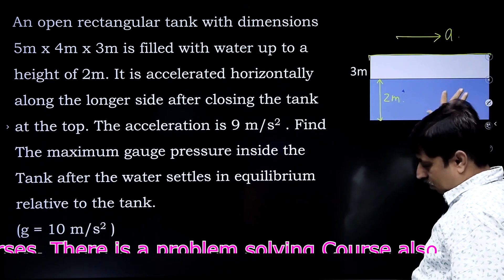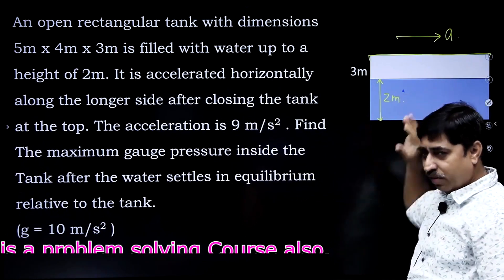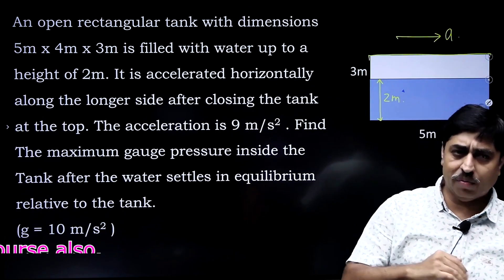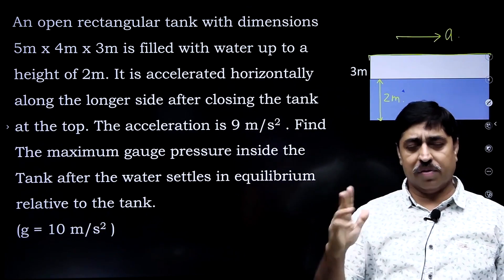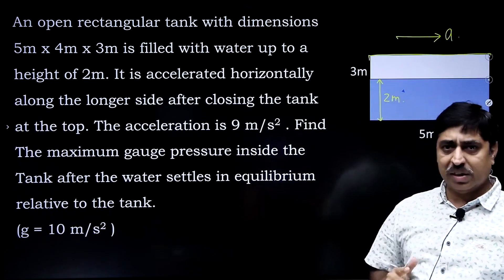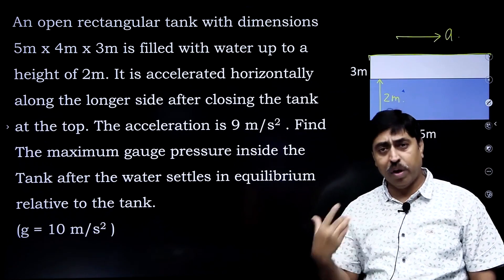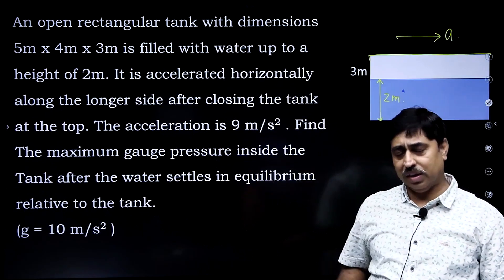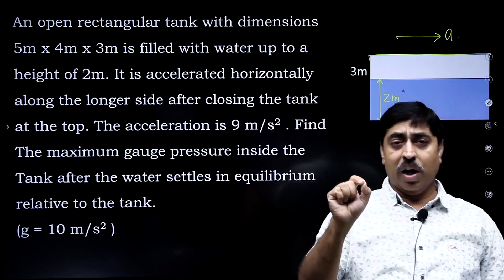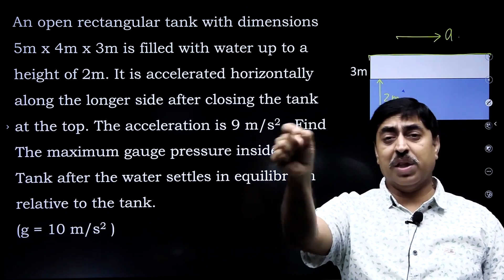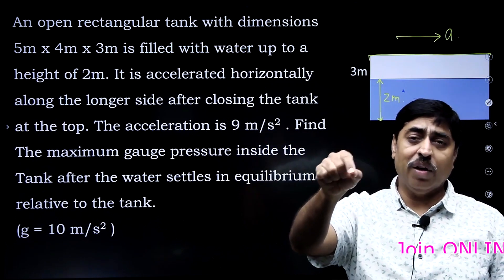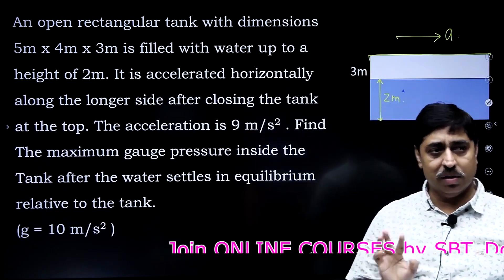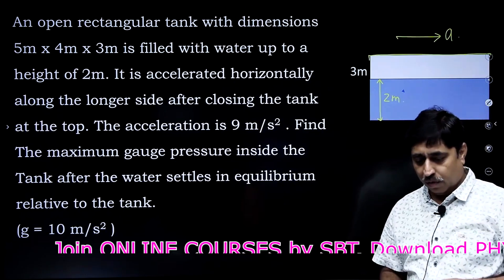Initially the water will sway, but if you keep moving with constant acceleration for a long period of time, the water will stabilize inside the tank. The question assumes water has stabilized. Now, at which point is the pressure maximum inside the tank, and what is the value of gauge pressure at that particular point?